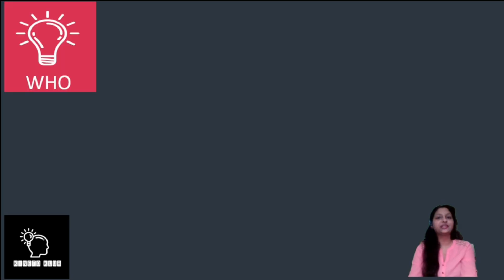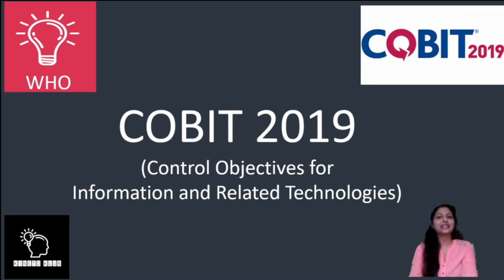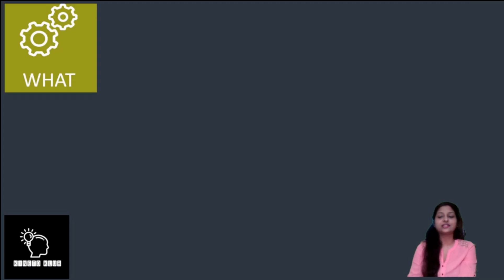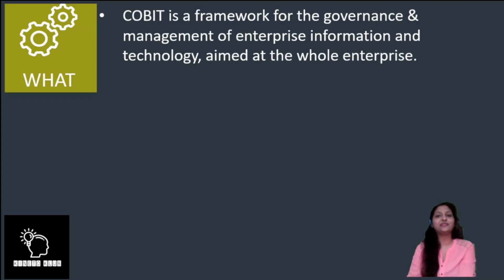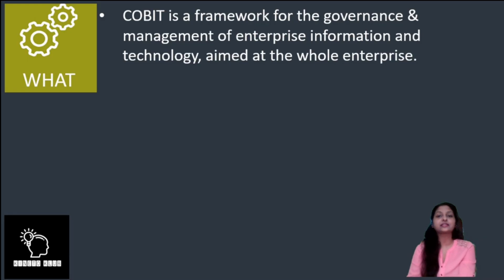So for today we have COBIT 2019, which is nothing but an acronym for Control Objectives for Information and Related Technology. It is basically a framework for the governance and management of enterprise information and technology, aimed at the whole enterprise — not limited to the IT department of any organisation.